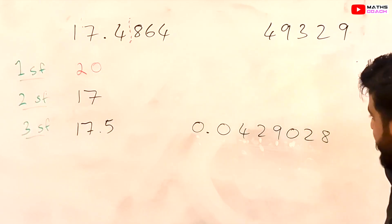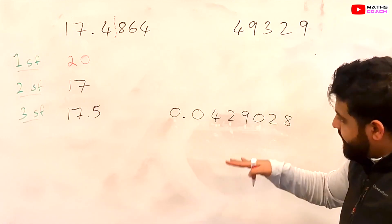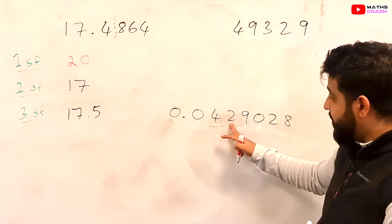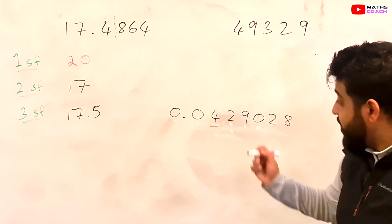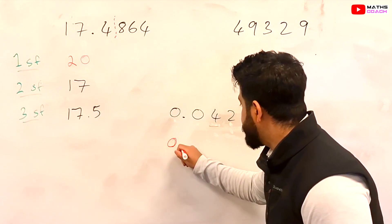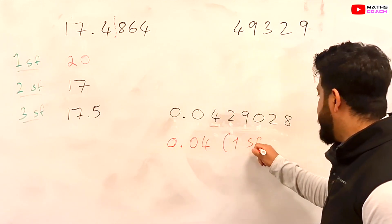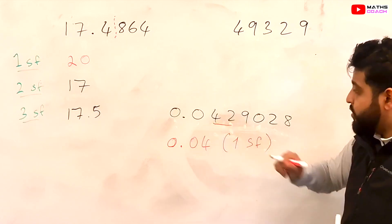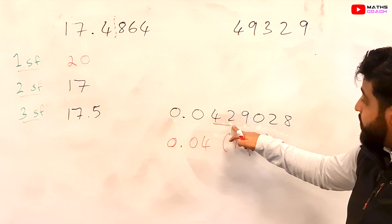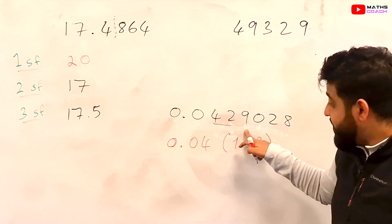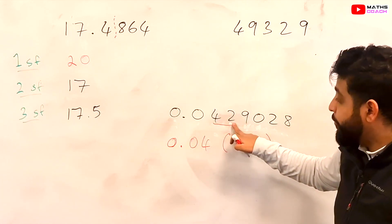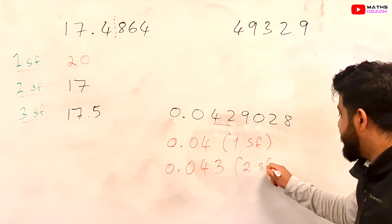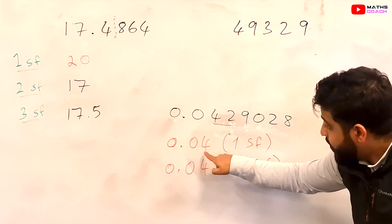Let's go through 0.0429028. Rounding to one significant figure: the first significant figure is 4. We consider the number after it, which is 2 — less than 5, so we keep the 4. To one significant figure this is 0.04. For two significant figures, the first is 4 and the second is 2. We consider the next number, which is 9 — that makes the 2 go up by one to 3, giving us 0.043 to two significant figures.